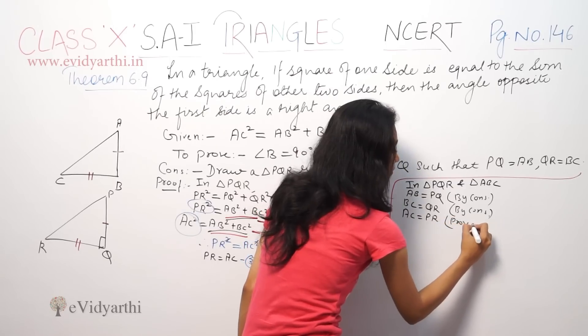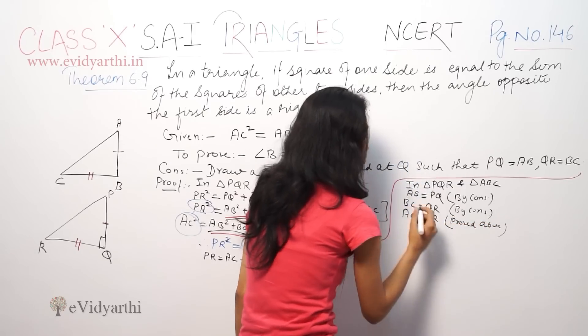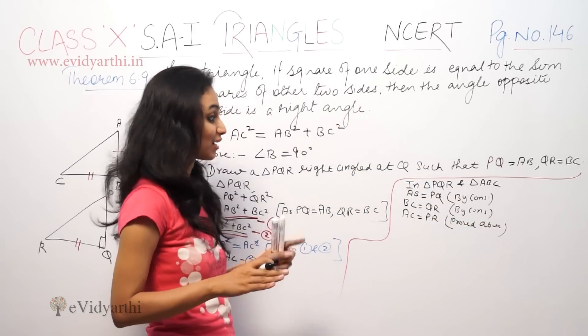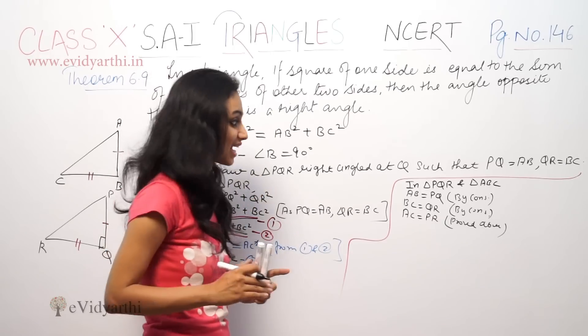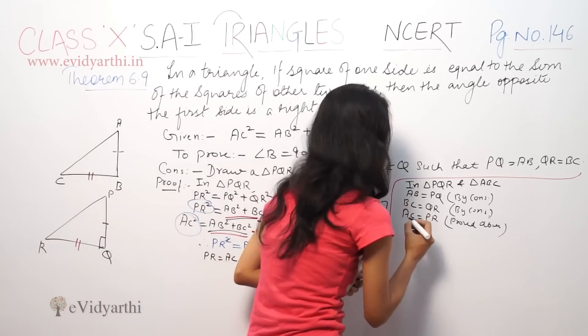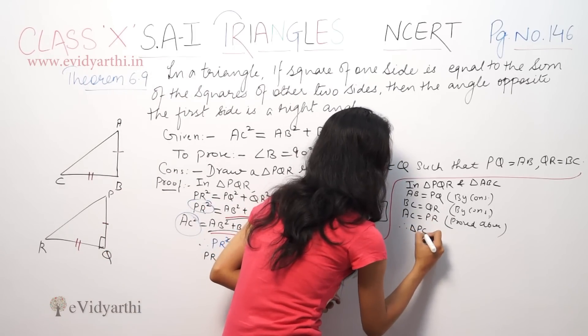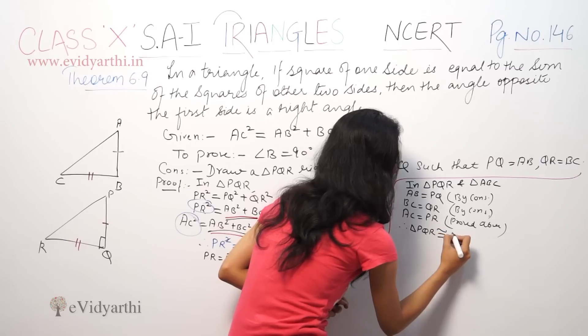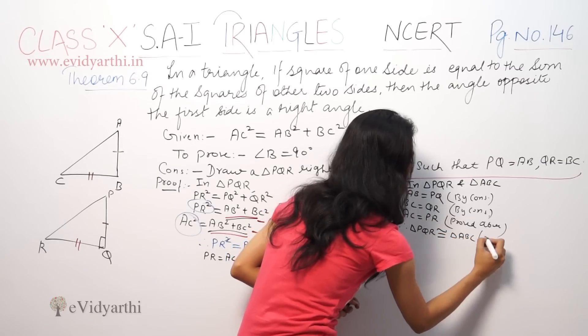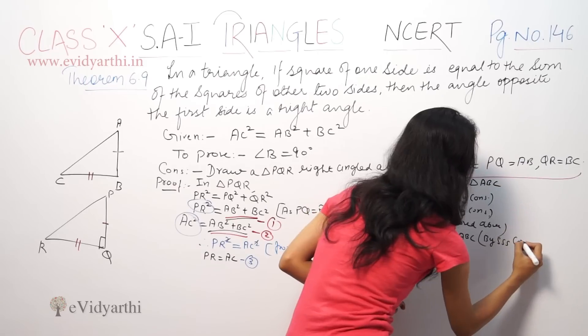And AC equal to PR. So, three sides are equal. That means by SSS side-side-side congruence, triangle PQR is congruent to triangle ABC by SSS congruence.